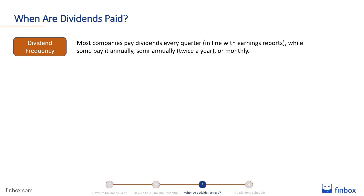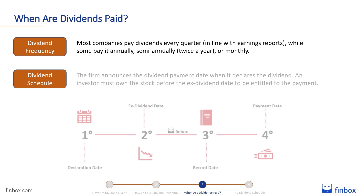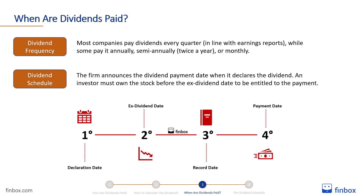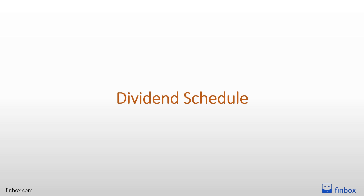In this video, we'll talk about the dividend schedule. Every time a company wants to pay a dividend, it must observe a precise schedule. The firm announces the dividend payment date when it declares the dividend. However, to be entitled to the payment, an investor must own the stock before the ex-dividend date. So the dividend schedule consists of the declaration date, the ex-dividend date, the record date, and the payment date. Let's discuss them more in depth.